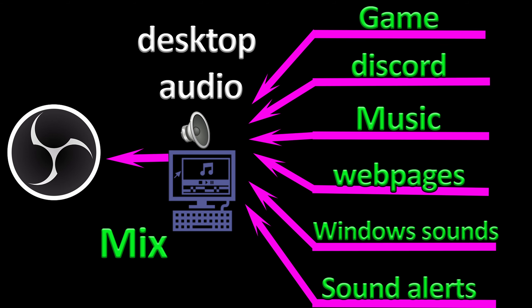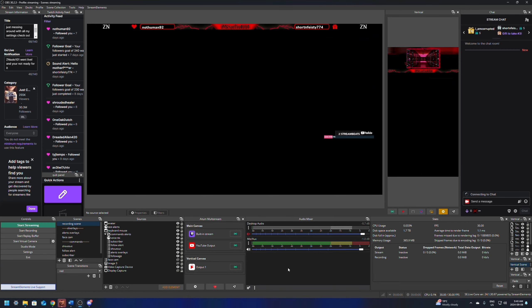To keep this basic, your stream is made up of six different sounds: game, Discord, music app like Spotify, web pages or browser sources, Windows sounds, and sound alerts. We can do all of this inside OBS so your Windows settings don't need anything changed in them at all. This will all be done in OBS.